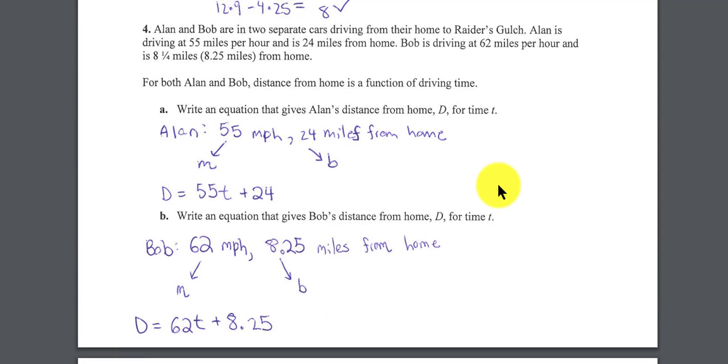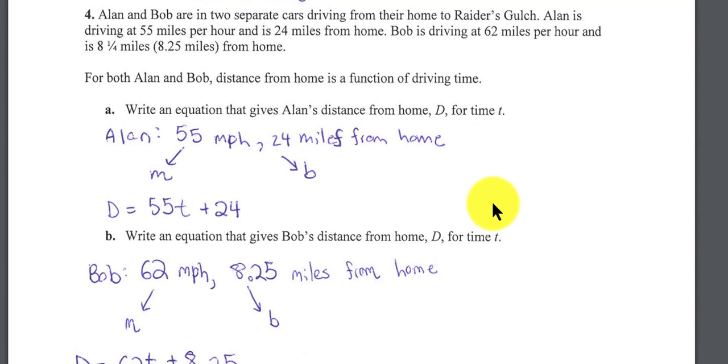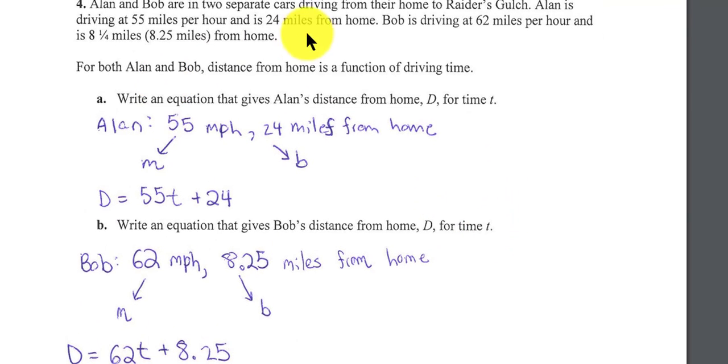Next problem, we have Alan and Bob. They're in two separate cars. So we take a look, and it looks like Alan is driving at 55 miles per hour. So his rate, or slope, is the 55 miles per hour, and his initial distance from home is 24 miles. So the b is the 24, the m is the 55. y equals mx plus b. In this case, they use d for y and t for time. That's our first equation.